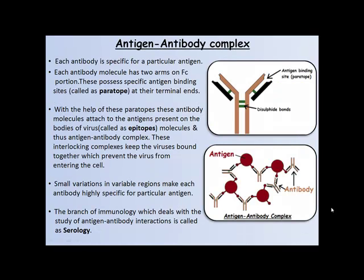Antigen-antibody complex. Each antibody is specific for a particular antigen. Each antibody molecule has two arms which possess specific antigen-binding sites called paratopes at their terminal ends. With the help of paratopes, antibodies attach to antigens present on the bodies of viruses called epitopes, thus forming an antigen-antibody complex. These interlocking complexes keep the viruses bound together, preventing the virus from entering the cell. Small variations in the variable regions make each antibody highly specific for a particular antigen. The branch of immunology dealing with antigen-antibody interactions is called serology.